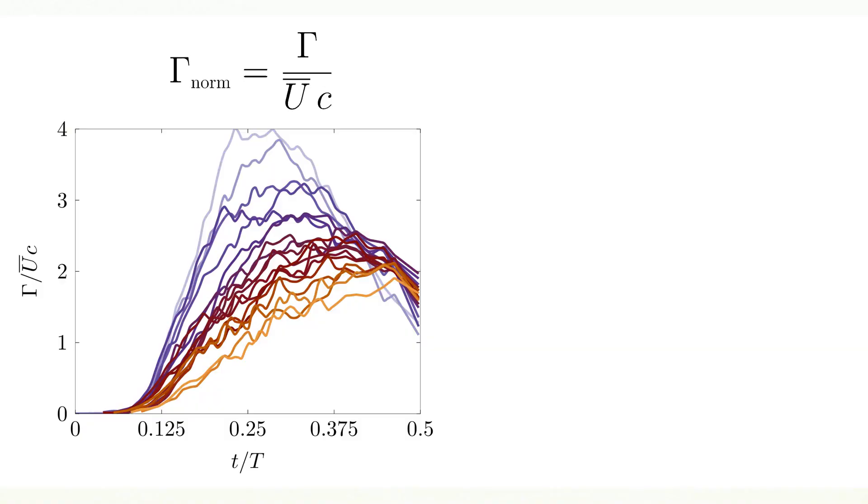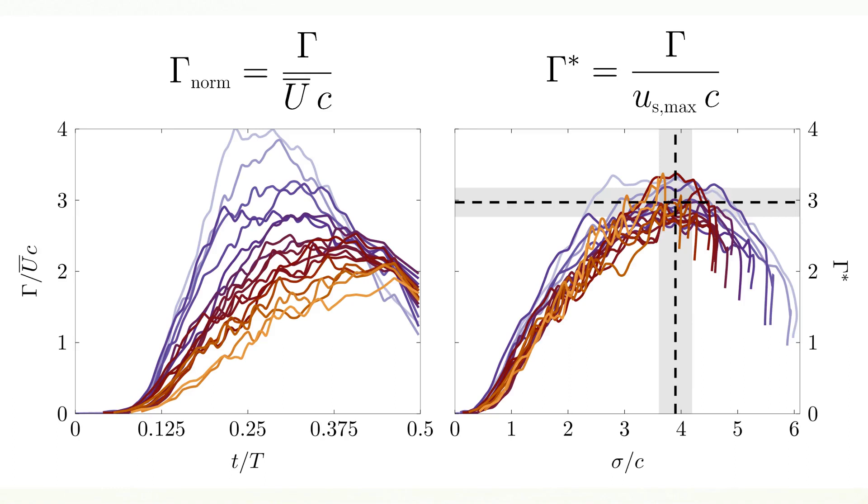For the leading edge vortex circulation, we see that normalizing it by the shear layer velocity instead of the stroke average velocity, the circulation maxima collapse to one timing around four advective times and a magnitude of about three for all observed kinematics. After the maximum is reached for the higher lift achieving kinematics, the circulation drops for the rest of the cycle.